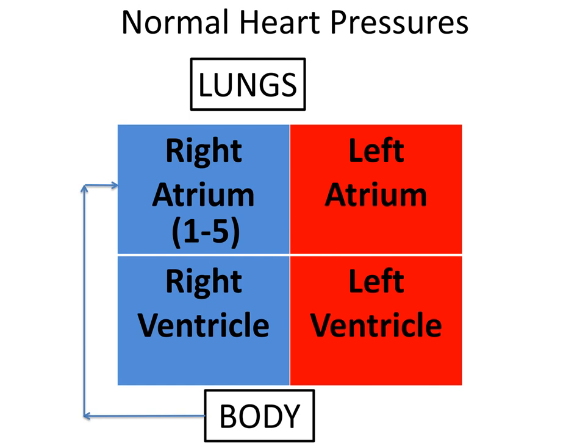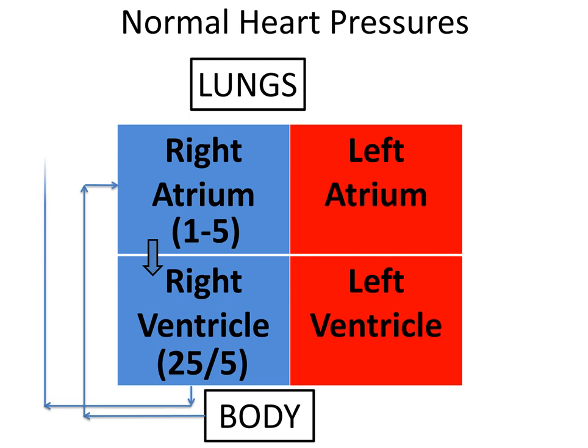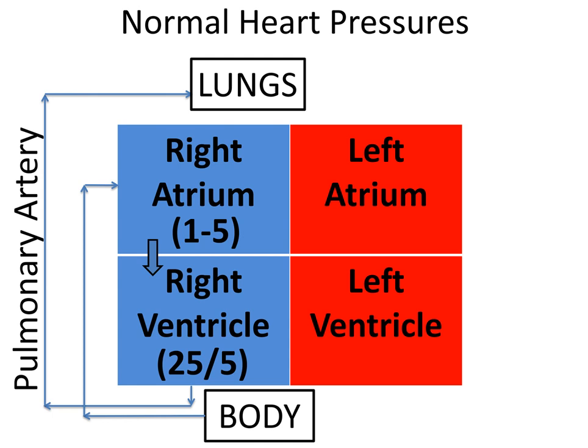Blood flows from the right atrium through the tricuspid valve into the right ventricle. The normal right ventricular systolic pressure is 25 and the normal diastolic pressure is 5. Blood then exits the right ventricle through the pulmonic valve into the pulmonary circulation via the pulmonary artery. A normal pulmonary artery pressure is a systolic of 20 and a diastolic of 10.